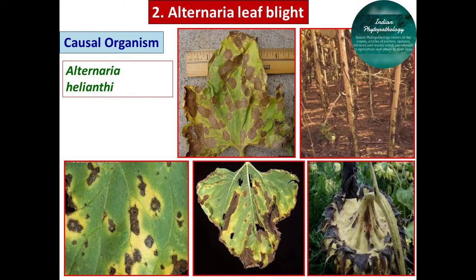Regarding the symptoms of Alternaria leaf blight, the fungus produces brown spots on leaves, but spots can also be seen on stem, sepals, and petals. As you can see in the image, brownish color spots develop on leaves and all over the plant parts. The lesions on the leaves are dark brown to black, circular to oval spots ranging from 0.2 to 0.5 millimeters in diameter. In later phases, the spots enlarge in size.